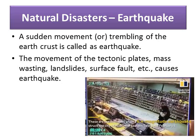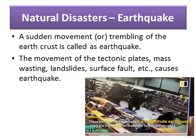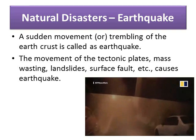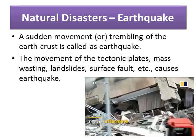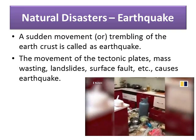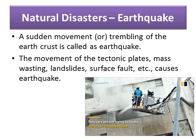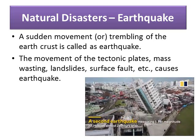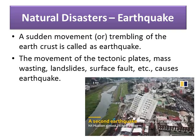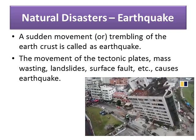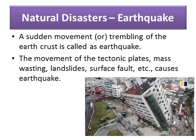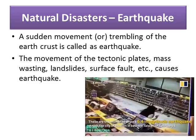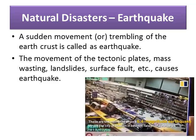Now let us learn about natural disasters. An earthquake is a sudden movement or trembling of the earth's crust. It is caused by the movement of tectonic plates, mass wasting, landslides, and surface faults. In the picture you can see the earthquake that occurred in the Hualien state of eastern Taiwan on February 6th — you can see how a building collapsed and the damage caused.